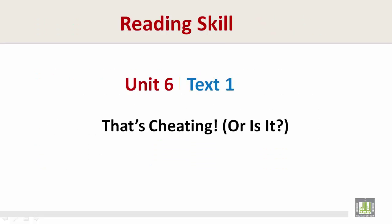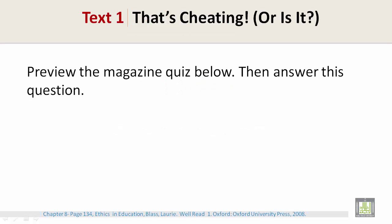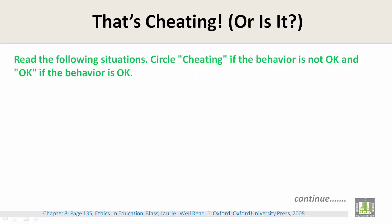Unit 6, Text 1: That's cheating, or is it? Preview the magazine quiz below, then answer this question: What is the topic of this quiz? Read the following situations. Circle 'cheating' if the behavior is not okay, and 'okay' if the behavior is okay.